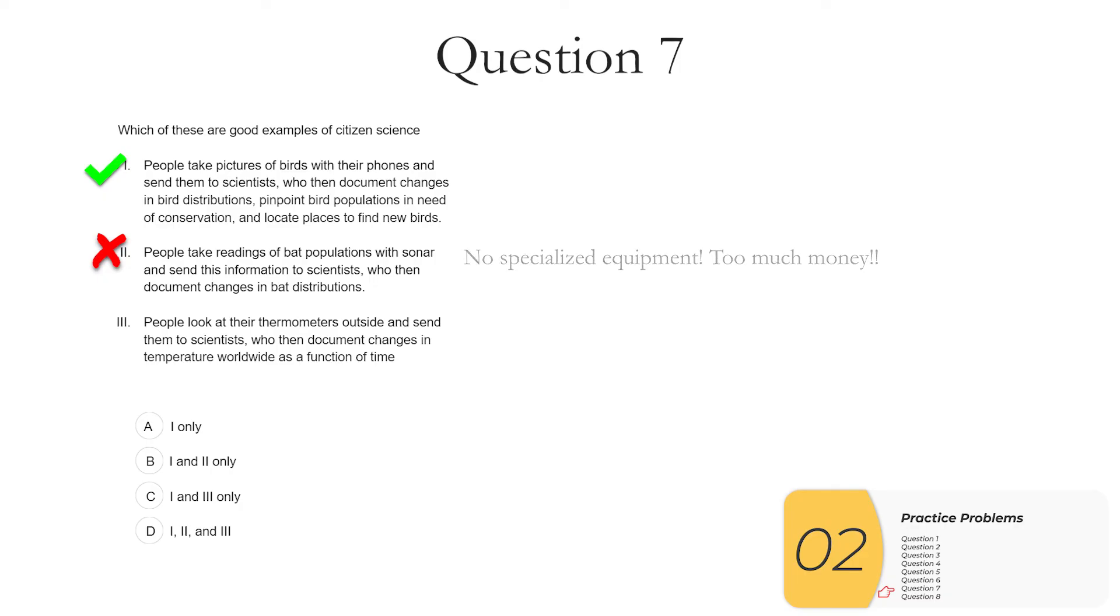Three, people look at the thermometers outside and send them to scientists. We then document changes in temperature worldwide as a function of time. So again, this is cheap and low-skilled data that you get from everywhere, and thus is a great example of citizen science. So our answers here are one and three, only C.